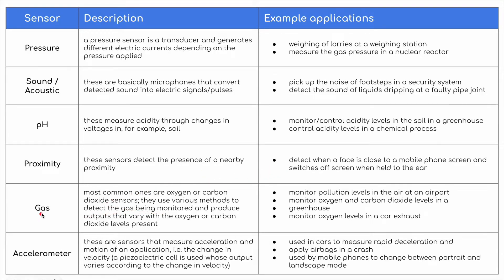We have gas sensors — most commonly oxygen and carbon dioxide sensors. These use various methods to detect the gas being monitored and produce outputs that vary with the oxygen or carbon dioxide levels present. They can be used for monitoring pollution levels in the air at an airport, monitoring oxygen and carbon dioxide levels in a greenhouse or in the home, and monitoring oxygen levels in a car exhaust system.